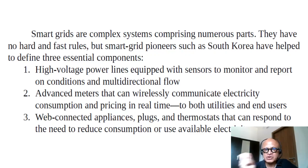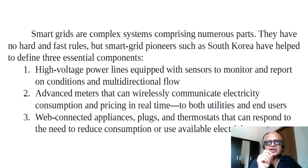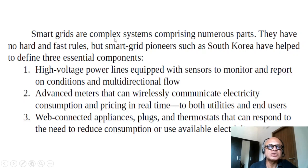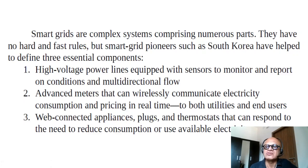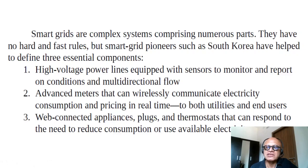Smart grids allow energy to flow both ways and have many smart ways of monitoring use, making suggestions, judgments, and decisions. From the book: smart grids are complex systems comprising numerous parts with no hard and fast rules. Smart grid pioneers such as South Korea have helped define three essential components, starting with high-voltage power lines equipped with sensors to monitor and report on conditions and multi-directional flow.